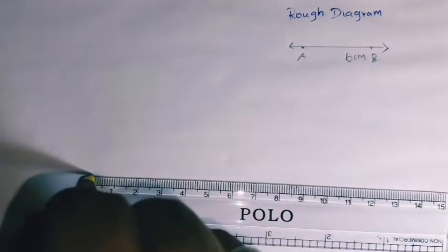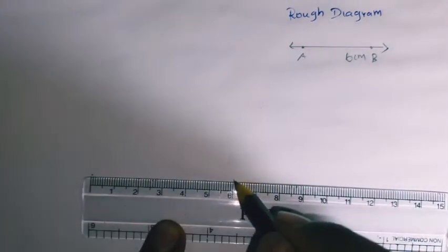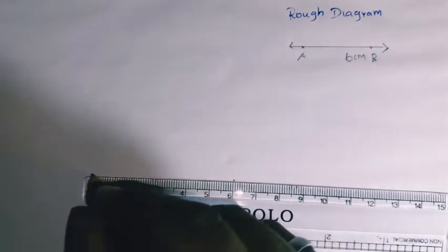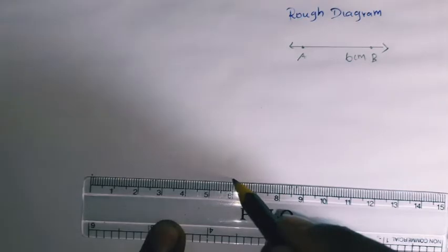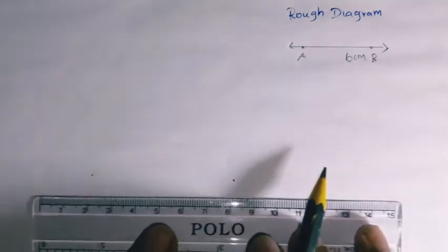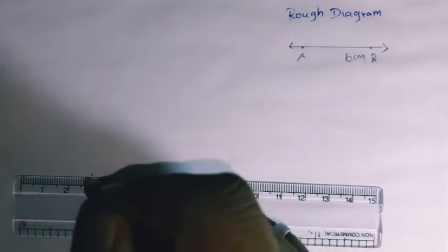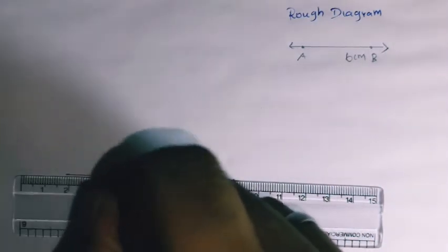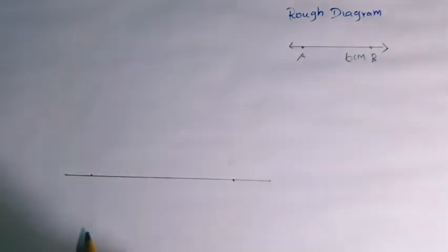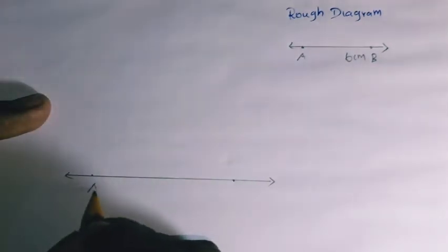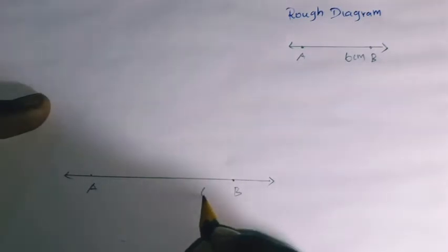For the fair diagram, mark zero at one end and 6 centimeters at the other end. Place a dot at zero and a dot at 6 cm. Draw a line connecting these dots - zero to 6 cm. One point is A and the other point is B. So we have a 6 cm line segment AB.